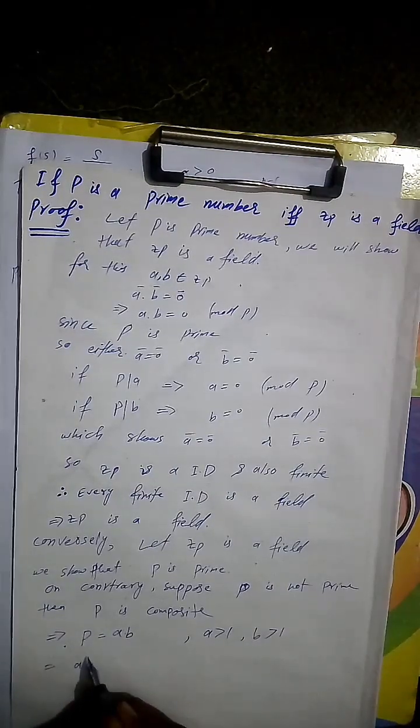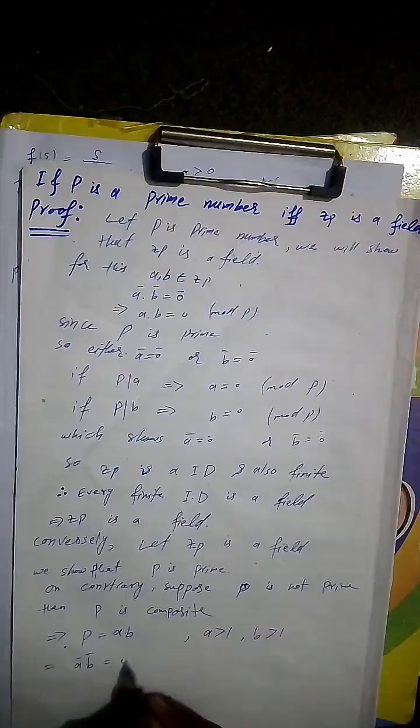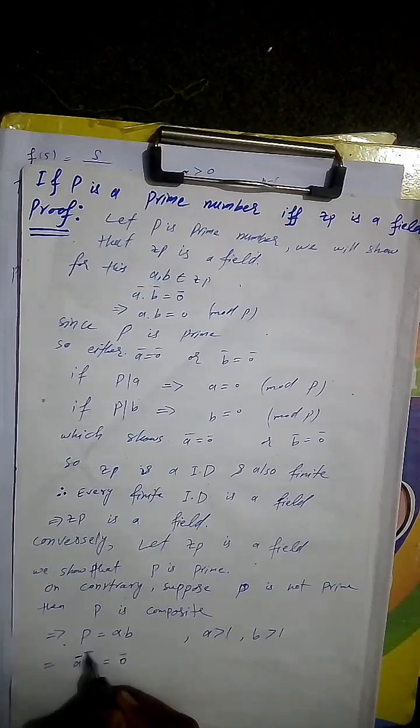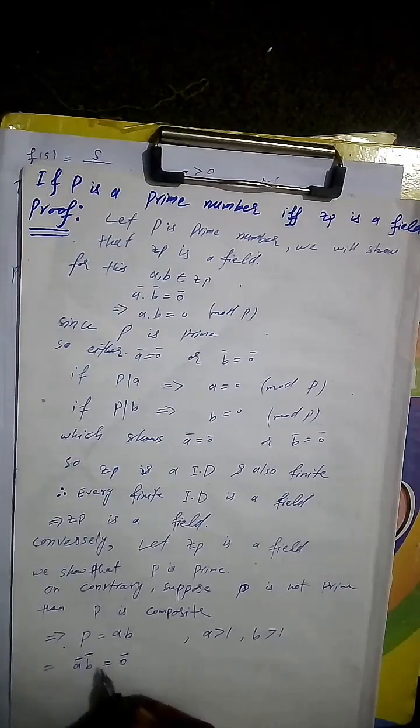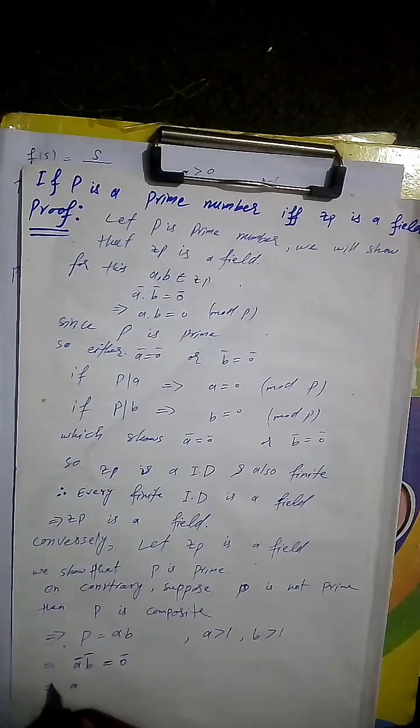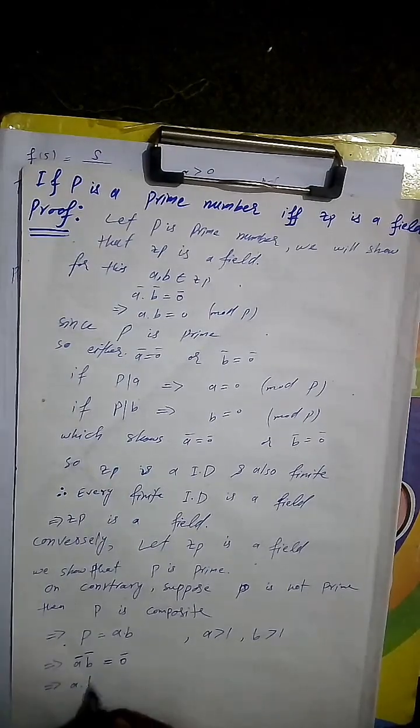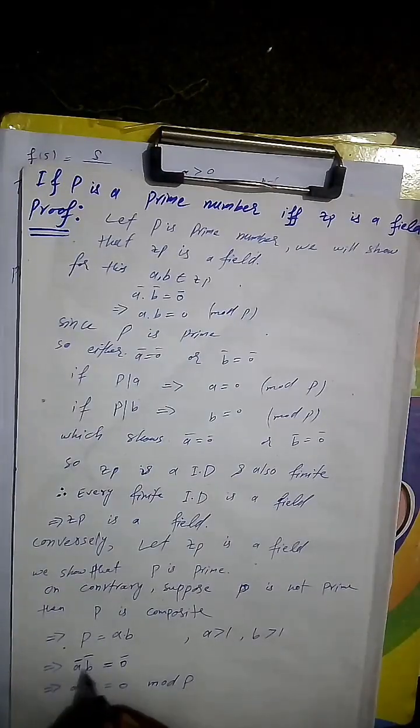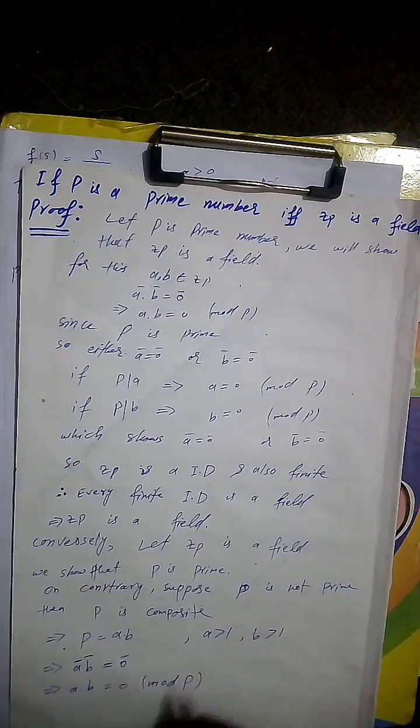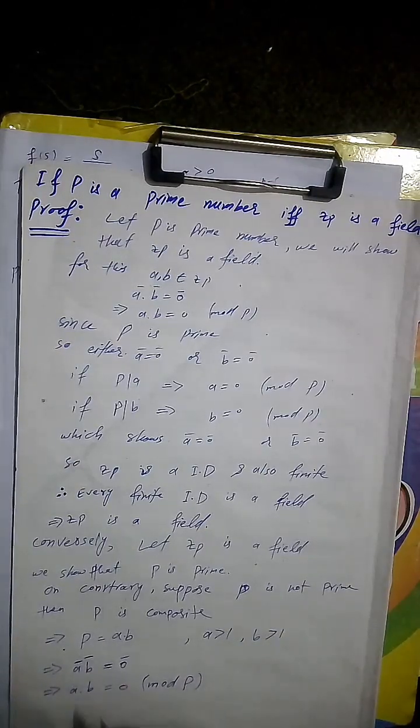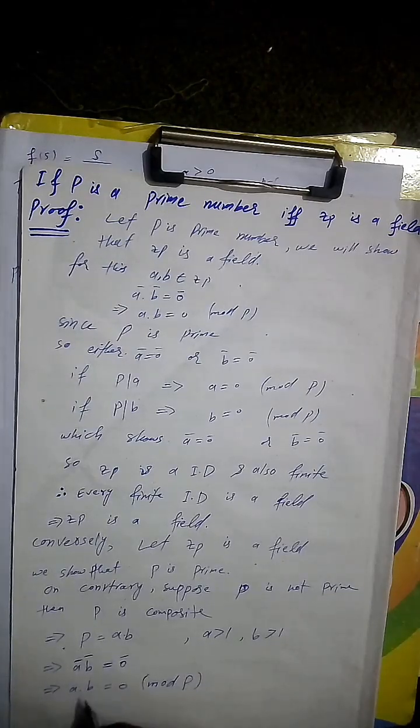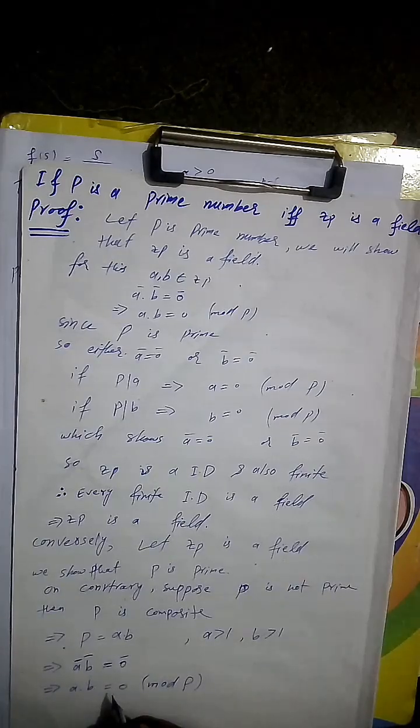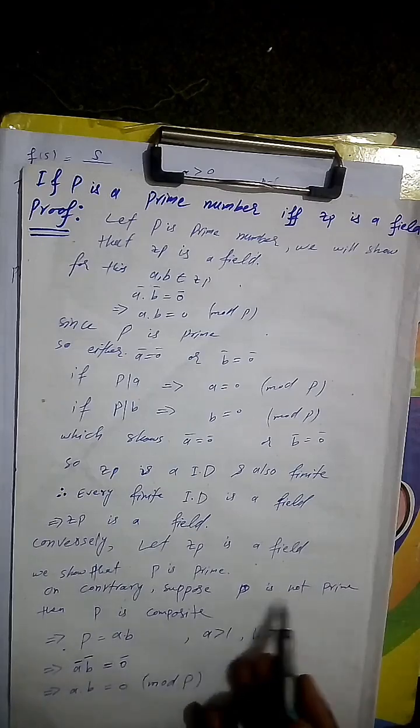Then here is equal to 0 mod P, where the margin is represented by P is equal to 0. If we mention A times B equal to 0 mod P, A into B equal to 0 mod P. So we had to show that P is not prime.